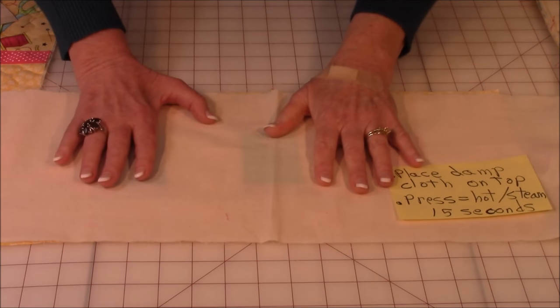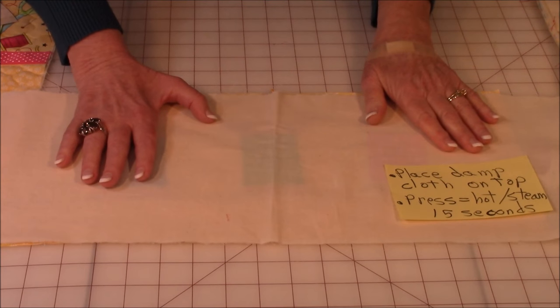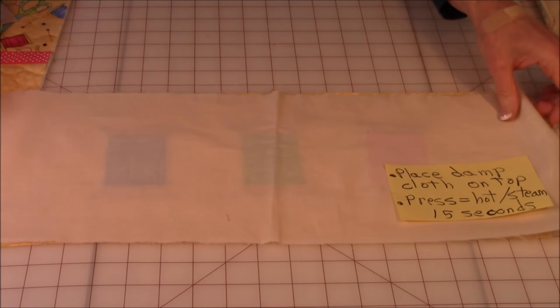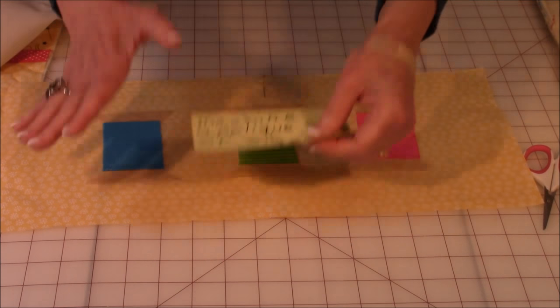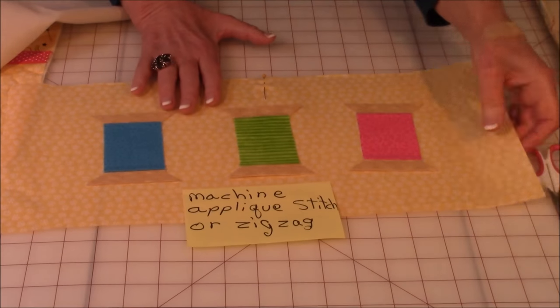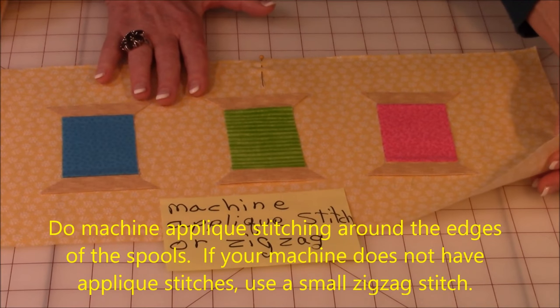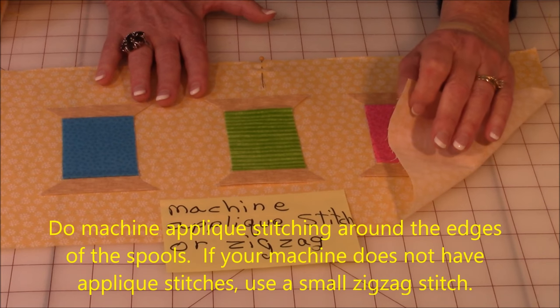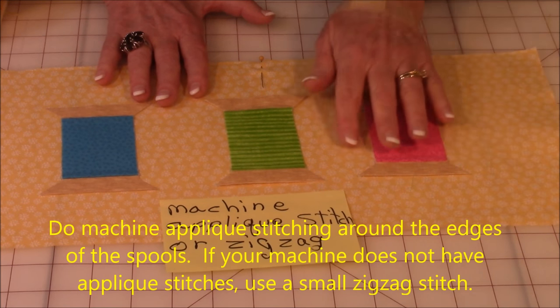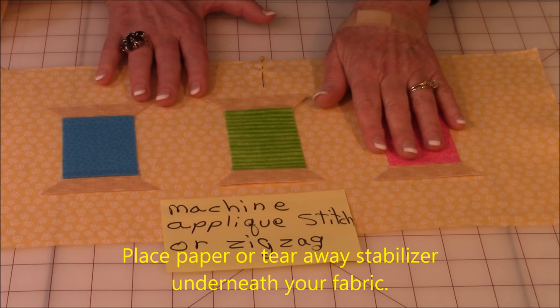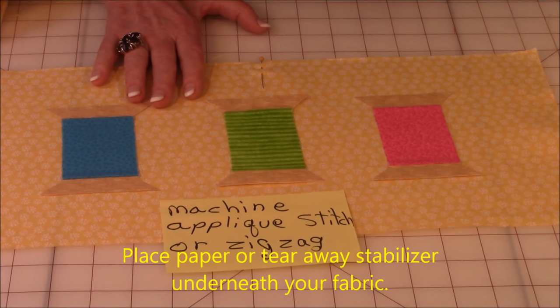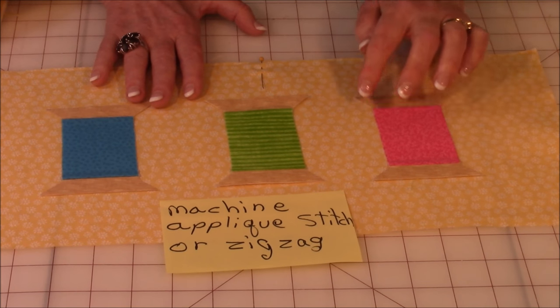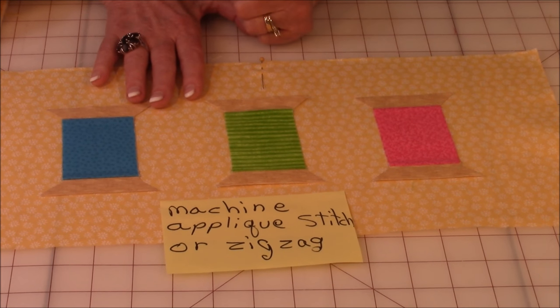And by the way, do this at your ironing board. Not on your cutting table or cutting board. Not a good idea. Once you have it fused on, now it's permanently fused on. You can't take it off. Now do your applique stitches. Put your stabilizer behind, whether it's paper or tear-away stabilizer, whichever one you prefer to use. Then do your applique stitches around all three spools. If you don't have any applique stitches, use a small zigzag stitch.